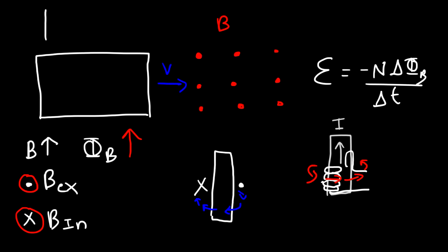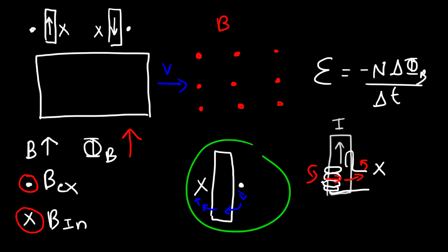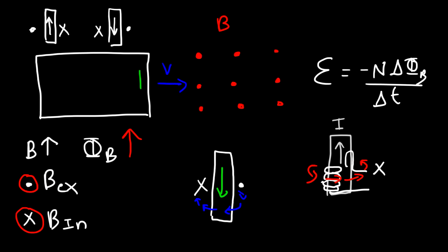Remember: anytime the current is going up, the magnetic field is going into the page on the right side and out of the page on the left side. The reverse is true — if the current is going down, the magnetic field will be out of the page on the right and into the page on the left. This picture matches what we have here, so the current is flowing downward in this segment of the wire.